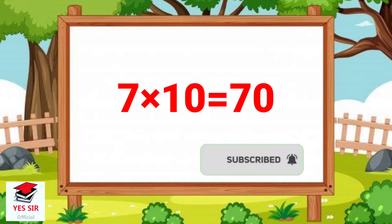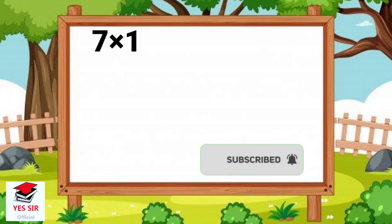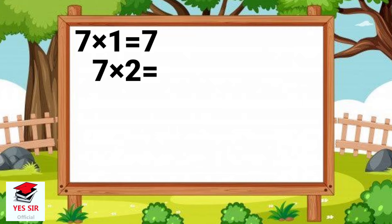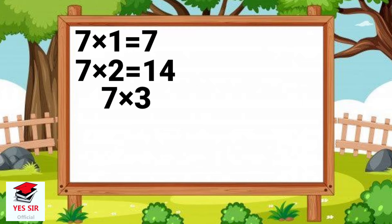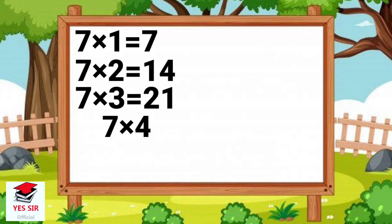Now repeat. 7 1's are 7. 7 2's are 14. 7 3's are 21. 7 4's are 28.